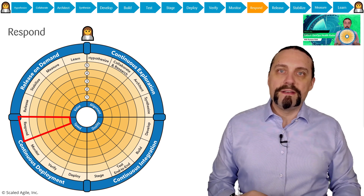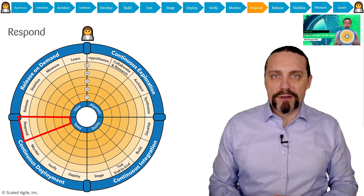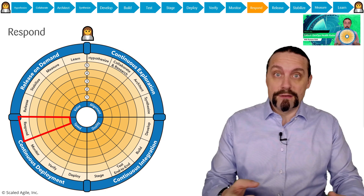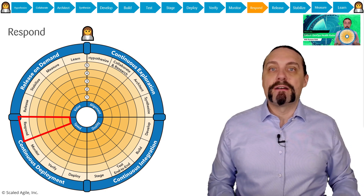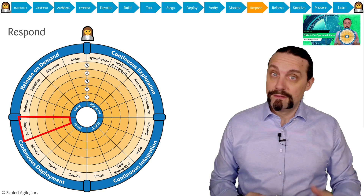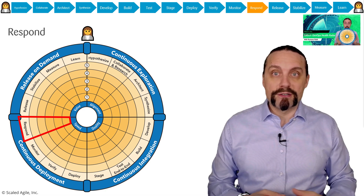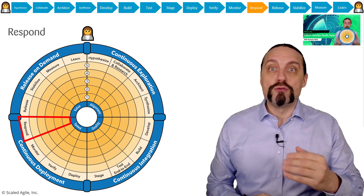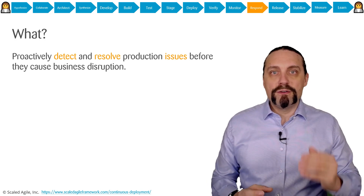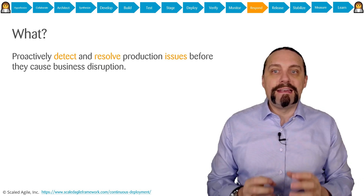After that, we continuously deploy the changes into production. After deployment to production, we verify that everything is still okay. We then continuously monitor our production environment, and we need to be able to respond to things that happen there. In the response step, we want to proactively detect and resolve production issues before they can cause any business disruption.